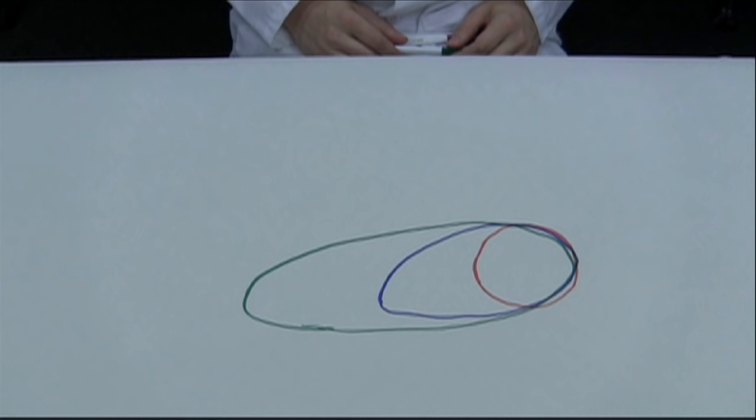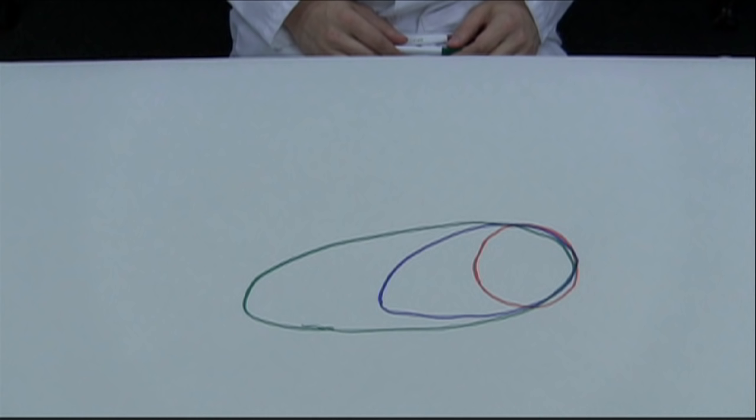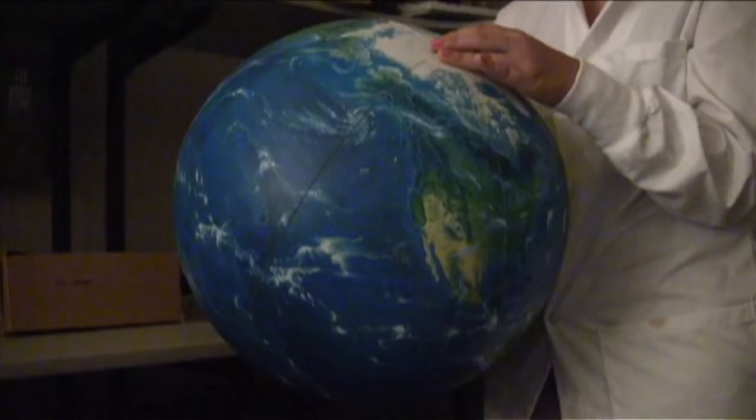However, if it's spread out over a larger area, we feel it less. Let's take a look at what this means for the Earth. Here we have a globe that's angled at about 23.5 degrees.